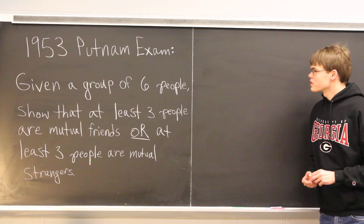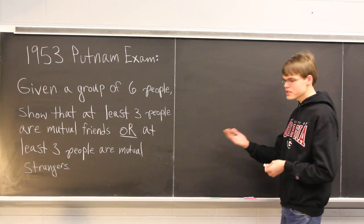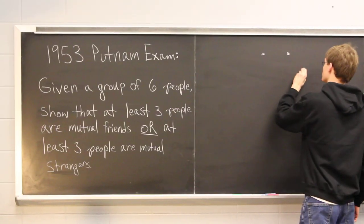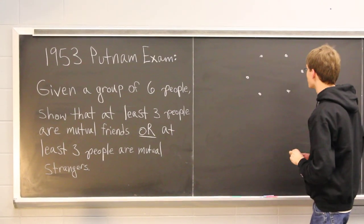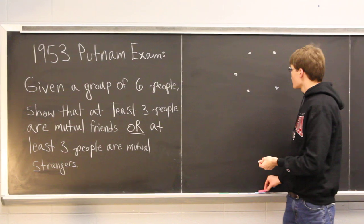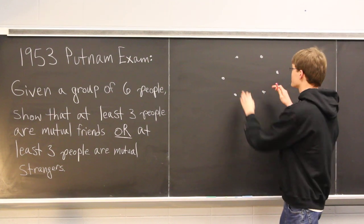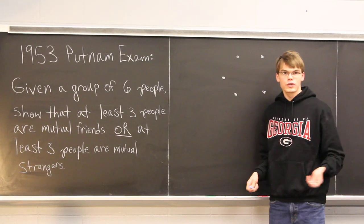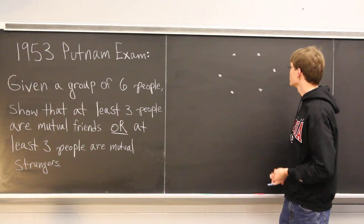To begin our solution, I'm going to represent these six people as points in a circle — six points, each representing one of the six people. Now I want to represent relationships between these people as follows: if two people are mutual friends, I'll represent that with a red line segment connecting the two points. Alternately, if two people are mutual strangers, I'll represent that relationship with a blue line between those two people.